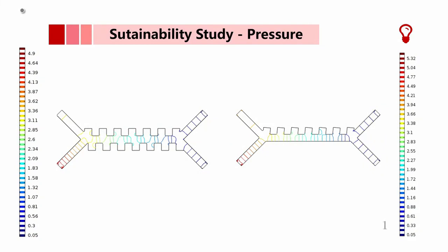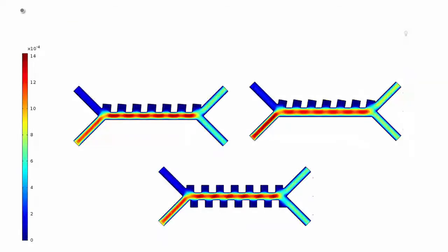For the pressure part, we wanted to see how much pressure both designs can sustain. For design 1, it was around 4.9 pascals, and for design 2, it was a bit higher at 5.3 pascals. This shows that the highest pressure is in the inlets due to the hydrodynamic force.